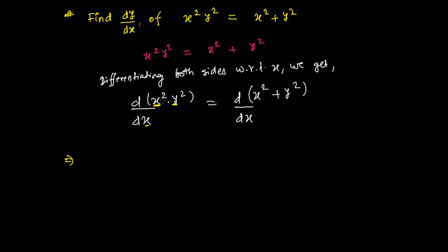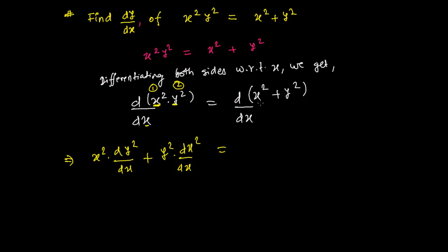Using the product rule: write the first function times the derivative of the second function, plus the second function times the derivative of the first function. On the right-hand side, we use the sum rule — derivative of x² with respect to x plus derivative of y² with respect to x.